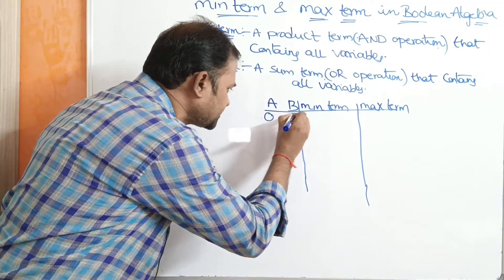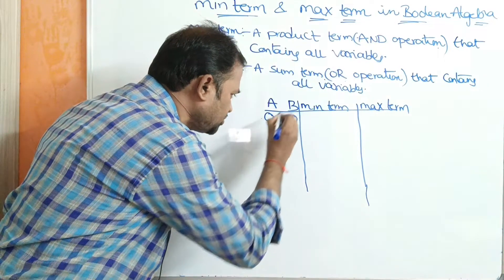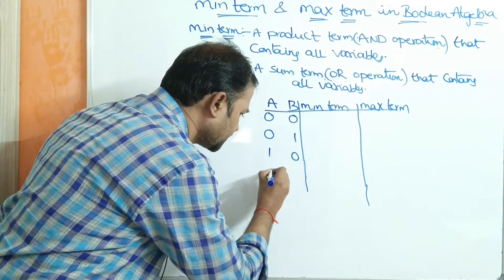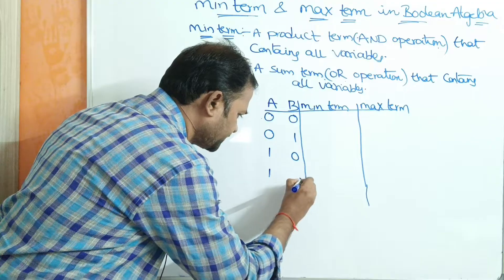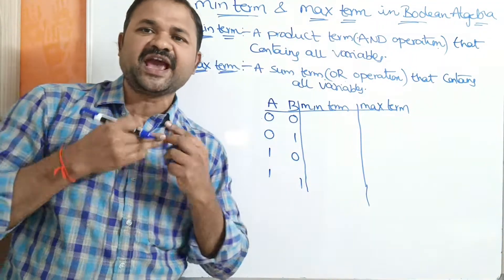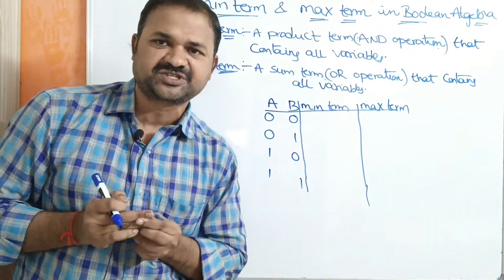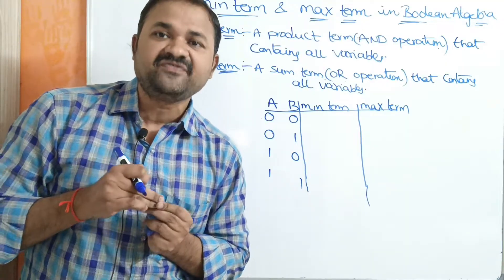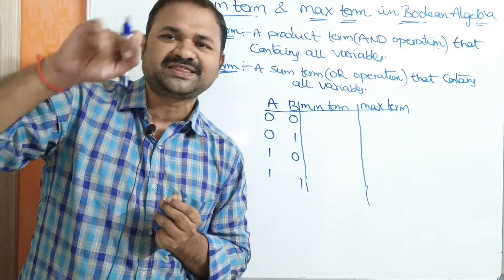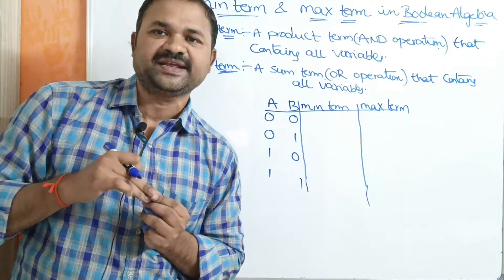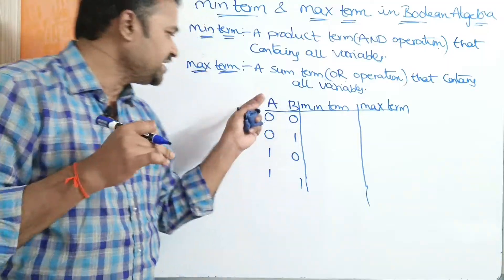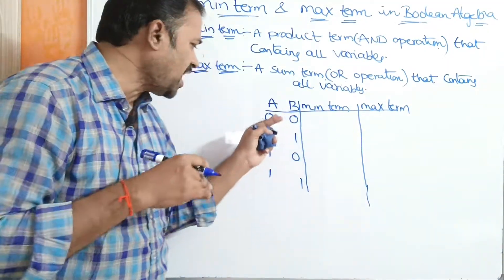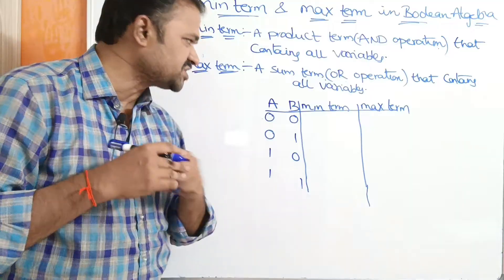The four input combinations are: 0,0 then 0,1 then 1,0 and 1,1. Likewise, if we have three variables A, B and C, then we will have 2³ = 8 combinations. Here we have two variables A and B, so we will have four combinations like this.